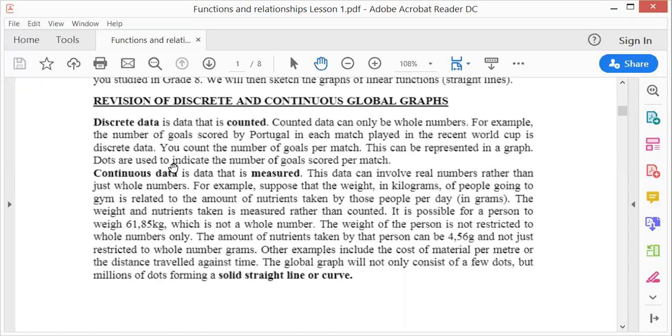Whole numbers means no fractions and no negative numbers. If you have to draw a graph, it will be dots. Now, continuous data cannot be counted but can be measured. This data can involve real numbers rather than just whole numbers, including all fractions.